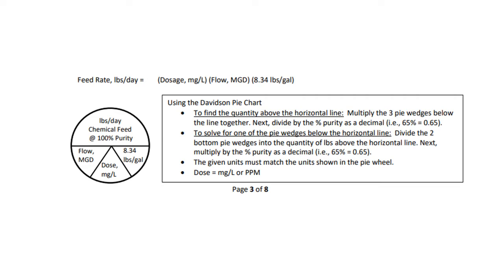To solve for one of the pie wedges below the horizontal line, we divide the two bottom pie wedges that we know — the flow and the standard of 8.34 pounds — into the pounds above the line. If it wasn't 100% purity, we'd multiply that percent as a decimal. Remember, the given units must match the units shown in the pie wheel.